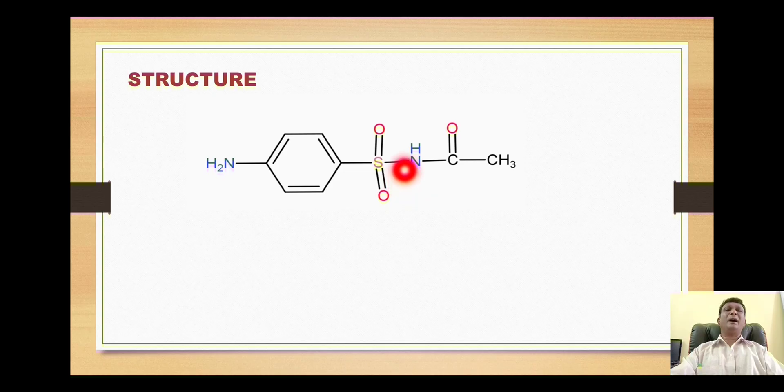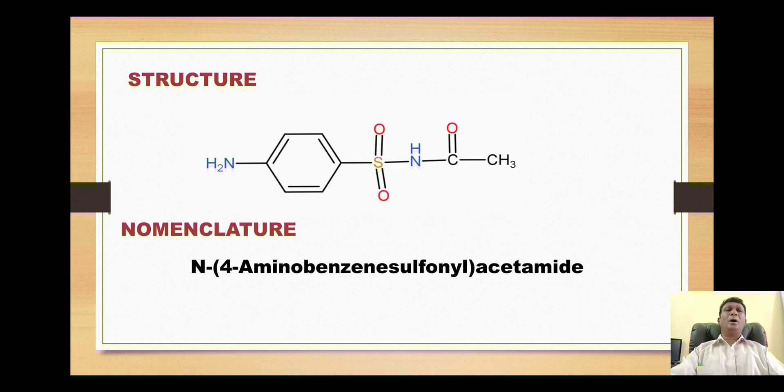One of the hydrogens of this amide is substituted with this group. That's why the IUPAC name of sulfacetamide consists of the basic nucleus acetamide where on nitrogen we have the presence of this group, which is 4-aminobenzene sulfonyl group, because this is position number 1.